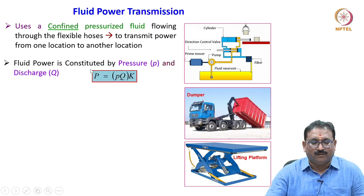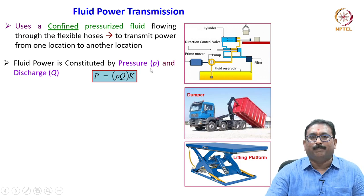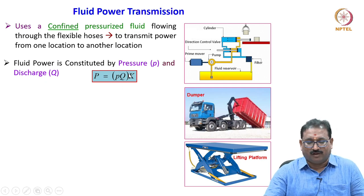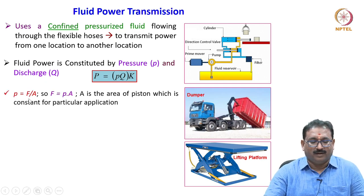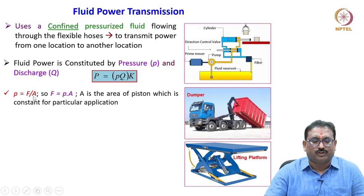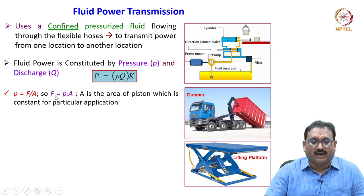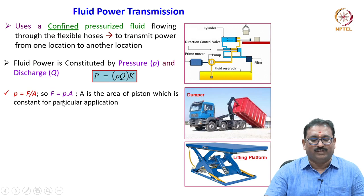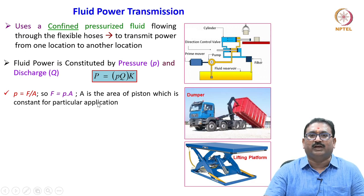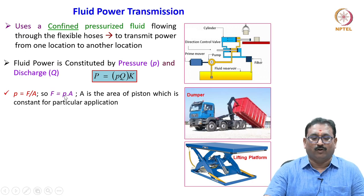Fluid power is constituted by pressure and discharge. P is a function of P and Q. The pressure P is force divided by area. What is important in fluid power is understanding the force output — how much load you are moving with the help of fluid pressure — because A is the area of the piston, which is constant for a particular application. To control the load output, you vary the pressure; for example, to move from 1 Newton to 1000 Newton by varying the pressure, since pressure decides your force output.